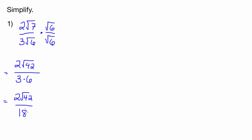So obviously 2 over 18 can be simplified. They are both divisible by 2. So if we divide this by 2, we get 1. If we divide this by 2, we get 9. So that will bring us to √42 over 9.